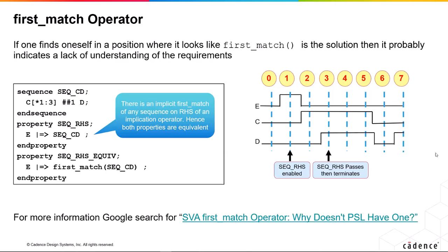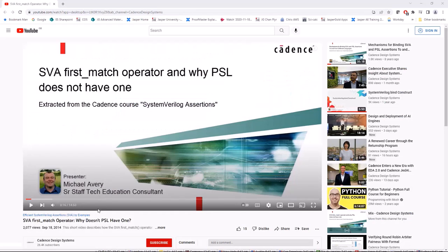Given my claim that it's a bad solution to things — if you're interested in more detail of why, there is a video, about 15 minutes long, that describes what first match is in SVA and tells you why PSO doesn't have one. If you follow that link in your PDF, you'll see the video which explains why. If you think first match is a good idea, I'd recommend you go watch that video.